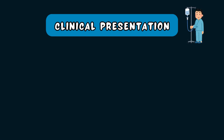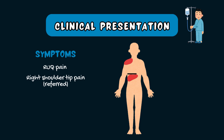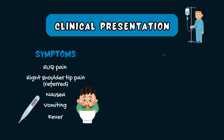The hallmark of cholecystitis is right upper quadrant pain, often after a fatty meal. Pain may be referred to the right shoulder. This is caused by the inflamed gallbladder causing irritation of the right hemidiaphragm, which shares innervation with the shoulder. The patient may also present with nausea, vomiting and a fever. On examination, you may notice that they are tachycardic and tachypneic, meaning they have an elevated heart rate and elevated respiratory rate.